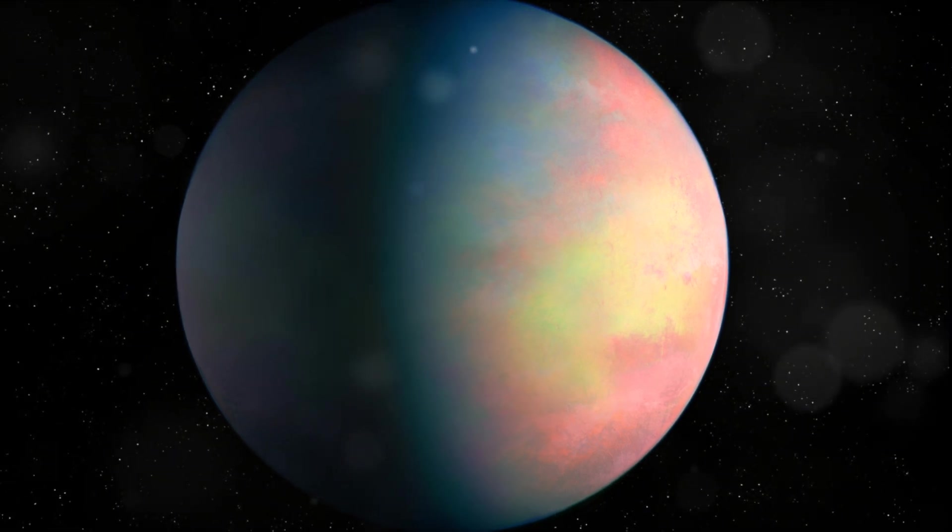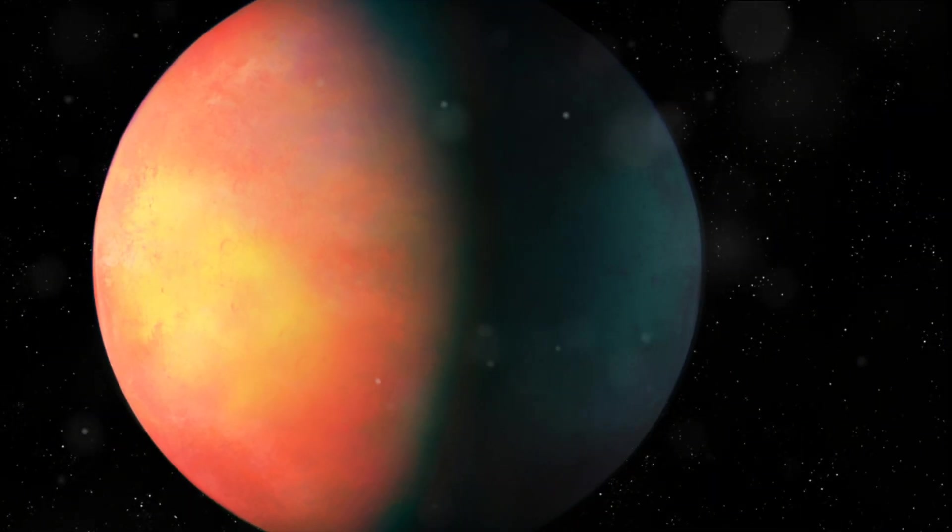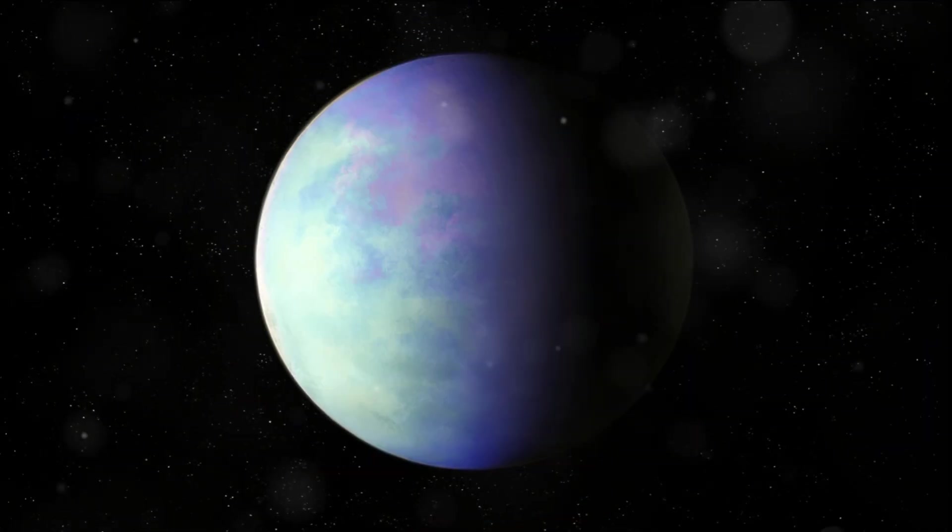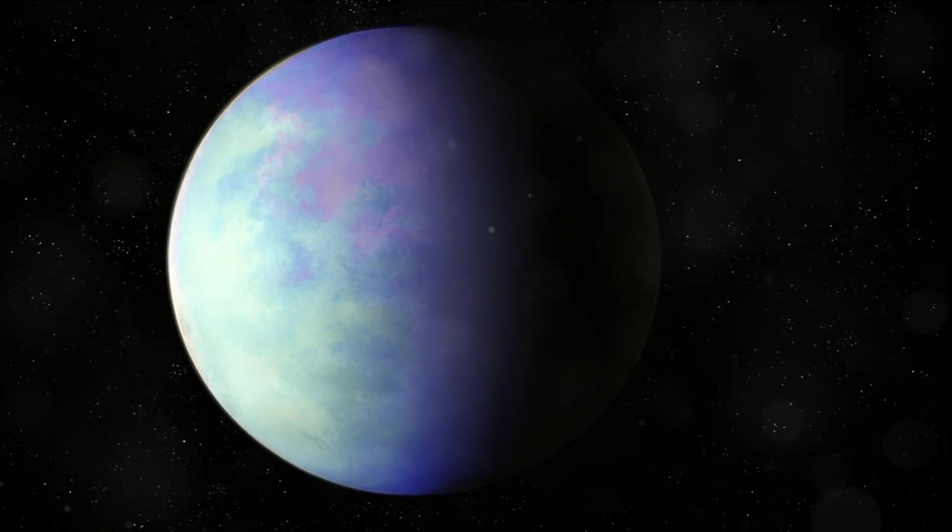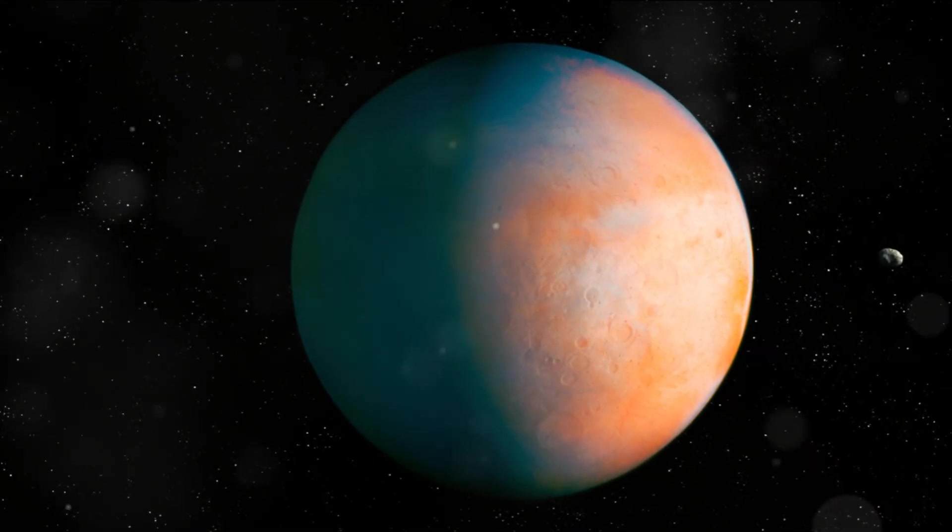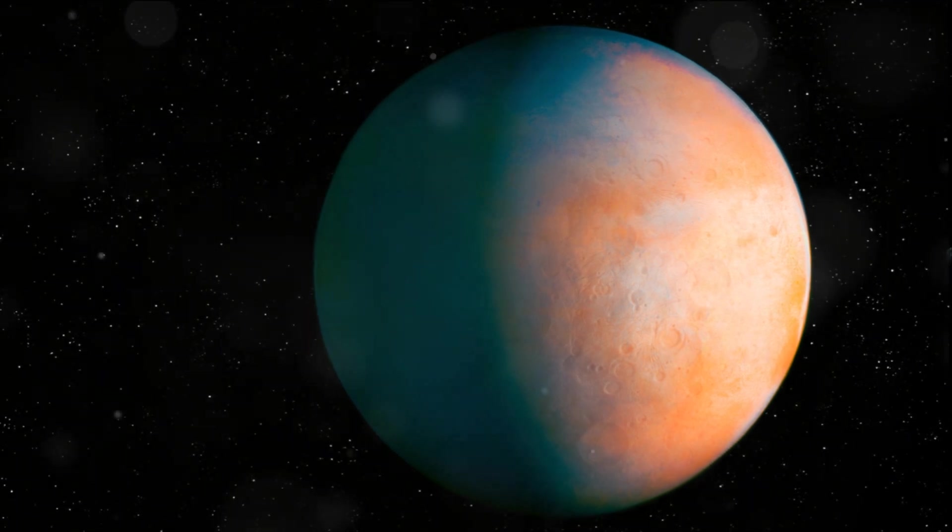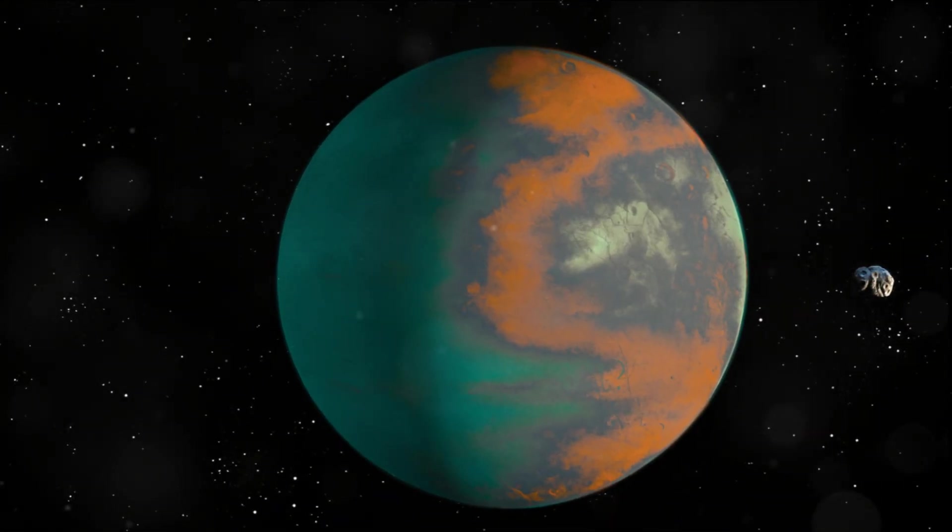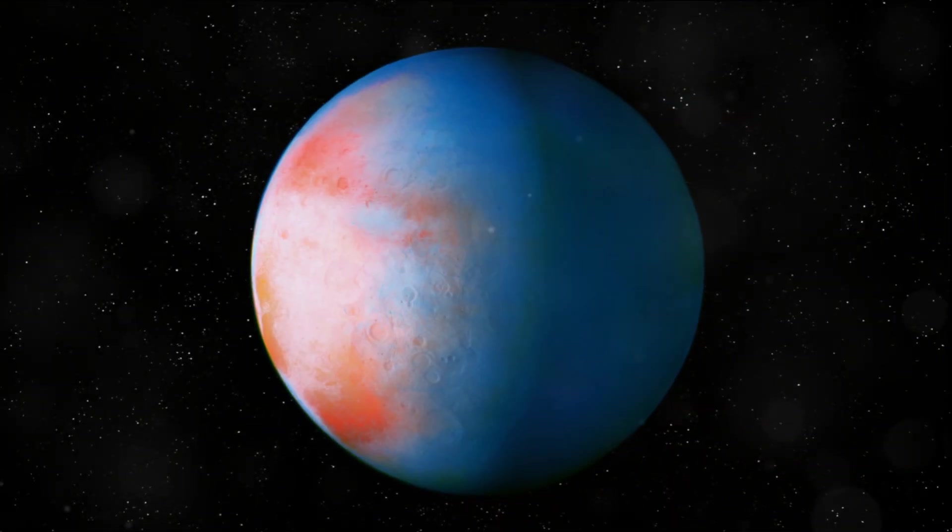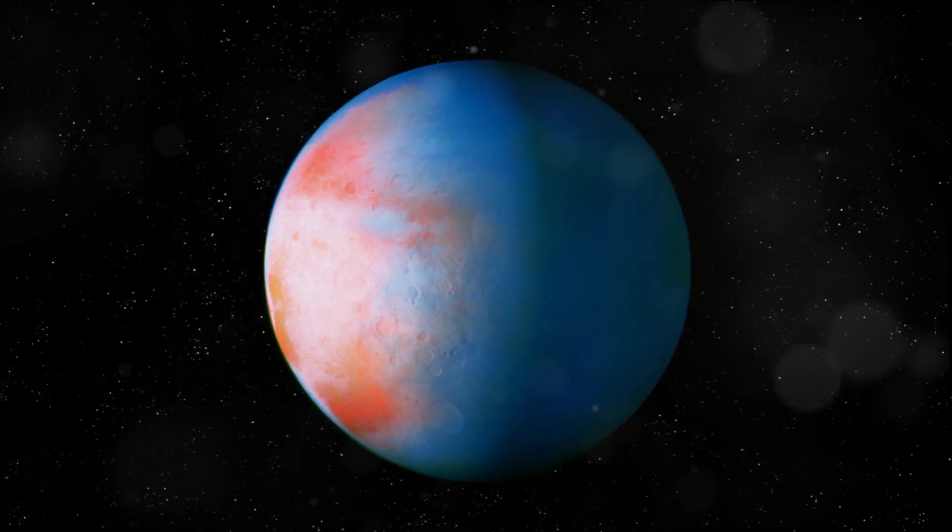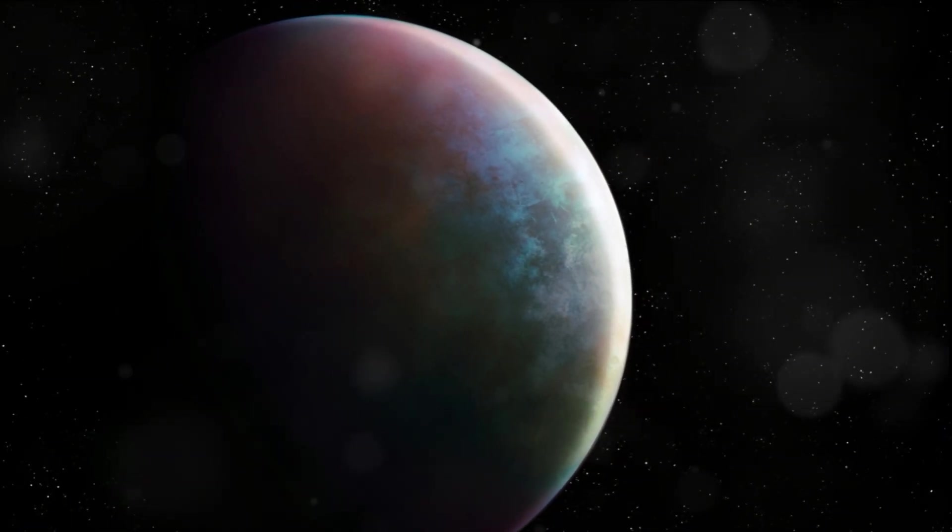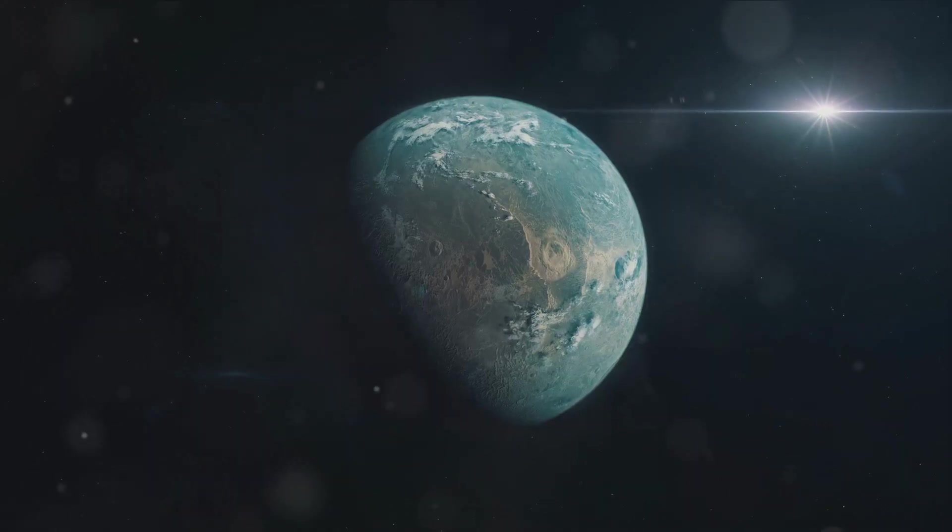Next up is Kepler 385f, a planet not much smaller than 385e. It follows an orbit that takes approximately 135 Earth days to complete. This planet is thought to be a super-Earth, a type of planet that is larger than Earth but smaller than the gas giants in our solar system. Theories suggest that it could have a rocky surface, much like our own home planet, but the intense heat from its close proximity to its star makes it unlikely to host life as we know it.